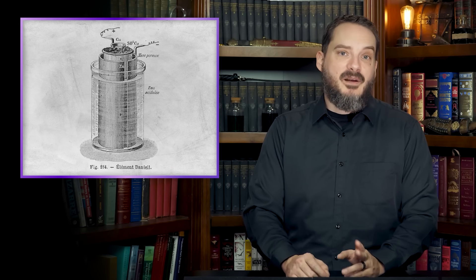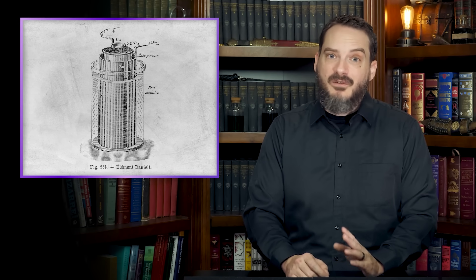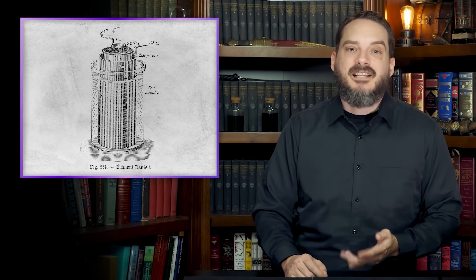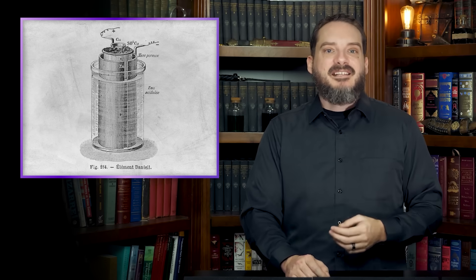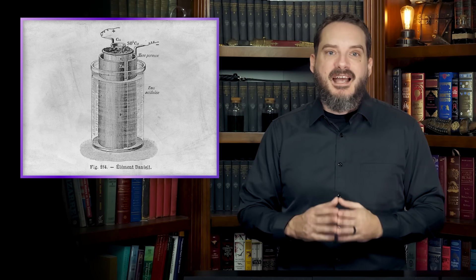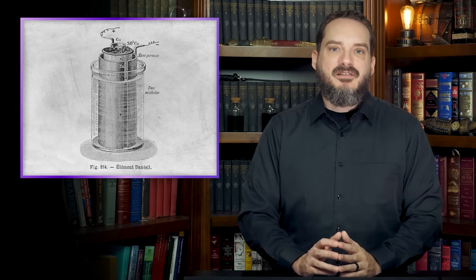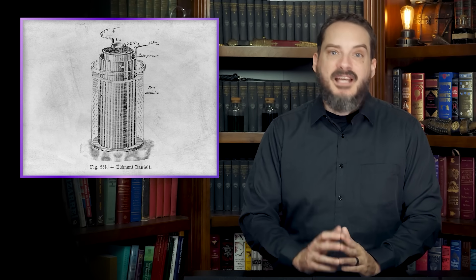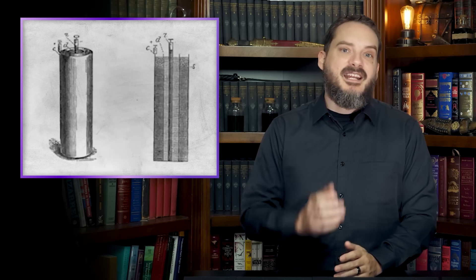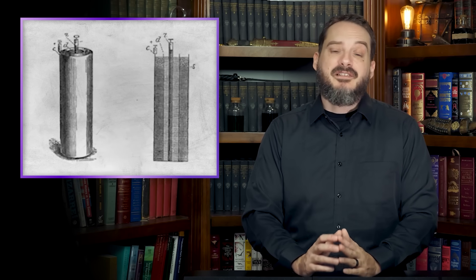The first truly practical battery, the Daniel cell, was invented in 1836 by British chemist John Daniel. The cell consisted of a copper pot filled with a copper sulfate solution, into which was inserted an unglazed ceramic pot filled with sulfuric acid, or zinc sulfate, and a zinc electrode. The ceramic pot acted as a semi-permeable membrane to allow sulfate ions to flow between the electrodes, while the use of the two electrolytes allowed the hydrogen produced in one half of the cell to be consumed in the other, eliminating yet another problem that plagued Volta's original pile.